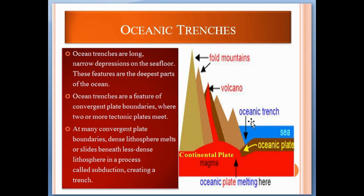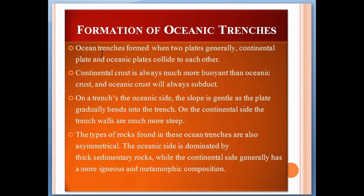This melt actually creates deep oceanic trenches. Ocean trenches form when two plates — generally a continental plate and an oceanic plate — collide. Continental crust is always much more buoyant than oceanic crust, so oceanic crust will always subduct. On the oceanic side, the slope is gentle as the plate gradually bends into the trench, while on the continental side the trench walls are much steeper. Oceanic trenches are also asymmetrical: the oceanic side is dominated by thick sedimentary rocks, while the continental side generally has a more igneous and metamorphic composition.